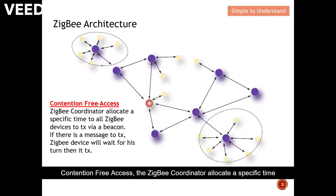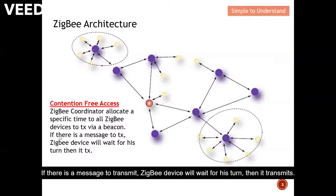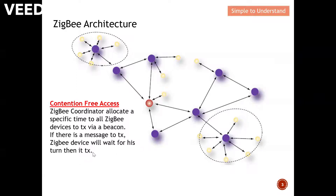For contention-free access, the ZigBee coordinator allocates a specific time to all ZigBee devices to transmit via a beacon. If there is a message to transmit, a ZigBee device will wait for its turn and then transmit.